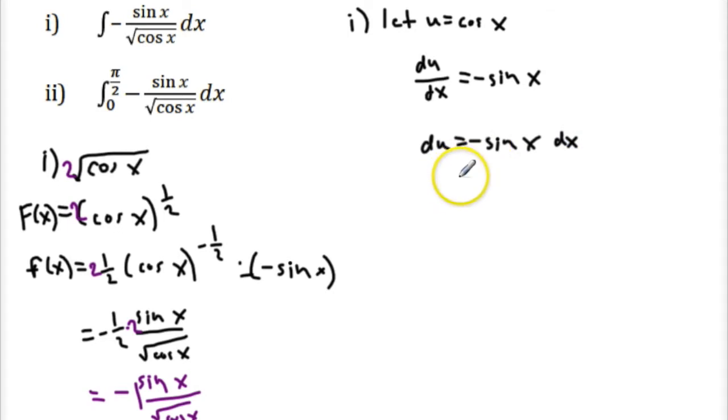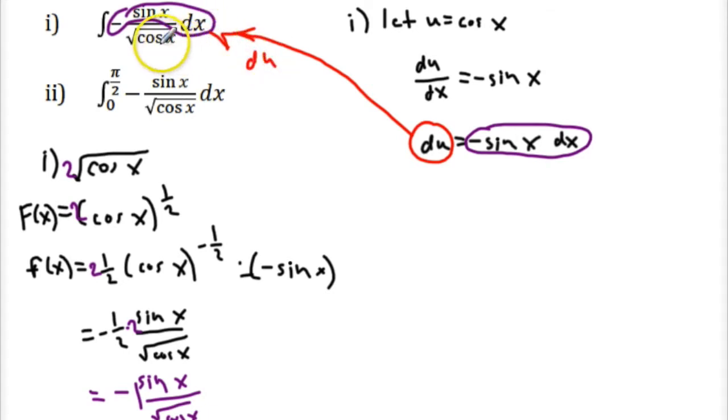And then we would notice that, well, we don't have to necessarily isolate. We can just leave it right here, because if you notice, this right here is all of this. Which means we can substitute du, which is right here, into this whole portion here. So that's du. And our denominator would be the square root of u, because here we have this, and that is u.